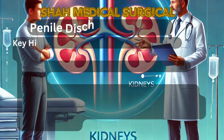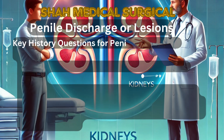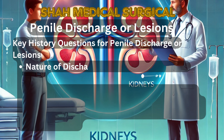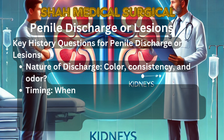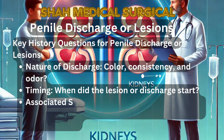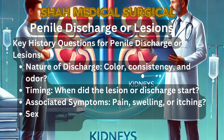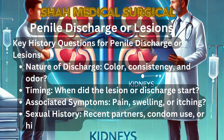Penile discharge or lesions. Key history questions include: 1. Nature of discharge — inquire about the color, consistency, and odor. 2. Timing — when did the lesion or discharge first appear? Is it persistent or intermittent? 3. Associated symptoms — look for pain, swelling, redness, or itching around the genital area. 4. Sexual history — recent sexual partners, condom use, or history of STIs. 5. Systemic symptoms — fever, malaise, or joint pain may indicate a systemic infection.